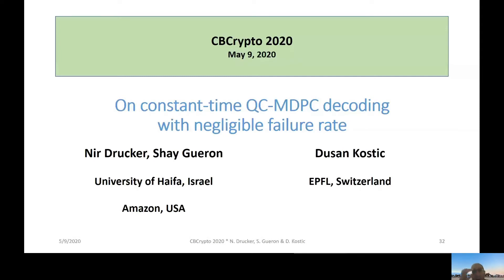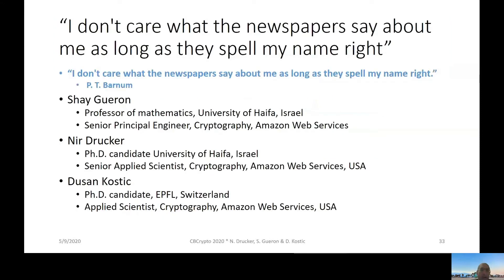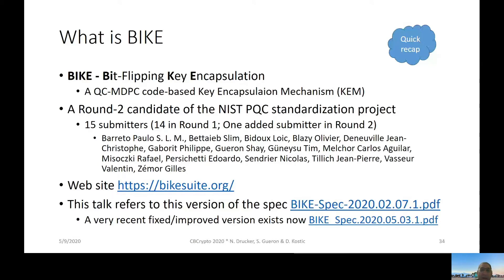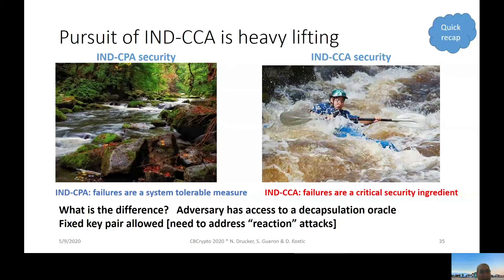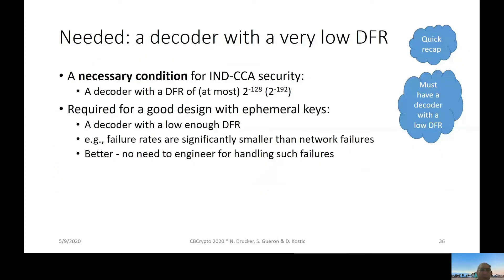I'm going to talk about constant time QC-MDPC decoding with negligible failure rate. The usual suspects: Nir Drucker, Dusan Kostic, and myself. Just a quick recap — the context is BIKE, the second round candidate for the PQC standardization project. My favorite slide: going from IND-CPA security to IND-CCA security is harsh, so what is needed is a decoder with a very low DFR.